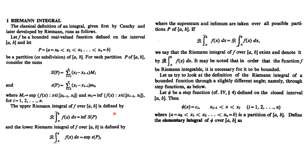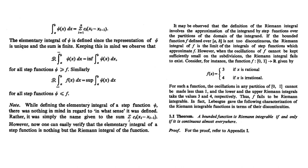Let ψ be a step function on [a,b] where ψ(x) = cᵢ (constant) for x in [xᵢ₋₁, xᵢ], i varying from 1 to n. Over each sub-interval the function attains a constant value. The elementary integral of ψ over [a,b] is the summation of these constants times the length of each sub-interval. If this value is unique and its sum is finite, it is represented as the integral of the step function ψ.